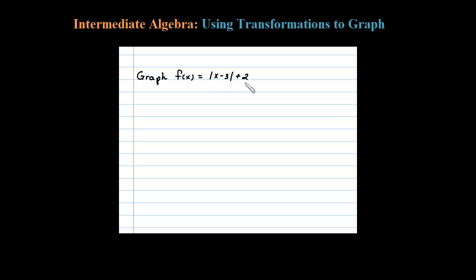Here we're asked to graph an absolute value function, and we're going to use our basic graphs and the transformations. So our basic graph we know is going to be f of x equals the absolute value of x.